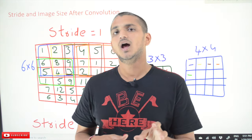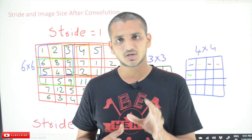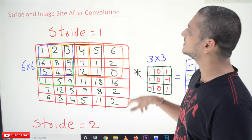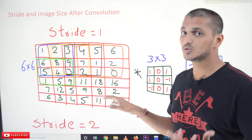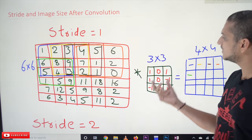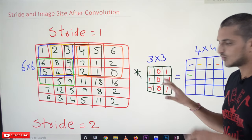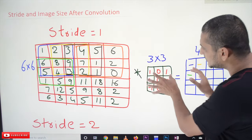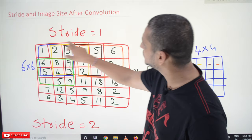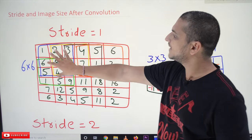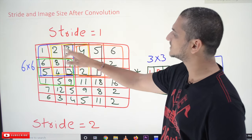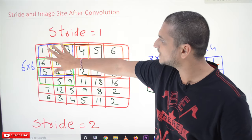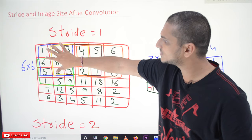Coming to today's class, let's first refresh the concept of convolution. We are taking a 6 by 6 image. In our last classes when we discussed convolution operation, we took a filter — here the filter considered is a 3 by 3 filter. We take this filter and place it on the image and do the convolution operation. This blue box is placed on the image first; we multiply and sum all values — for example, 1 multiplied with 1, then 0 into 2, and so on. The output after summation is placed in the result.